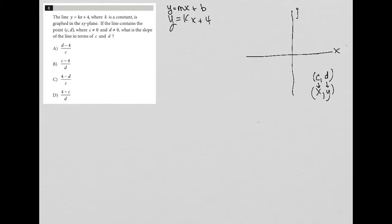And we're told that c does not equal 0 and d does not equal 0. What is the slope of the line in terms of c and d? Oh, well actually, that takes me right back up to this relationship. So I know that in a y equals mx plus b equation, m is the slope.